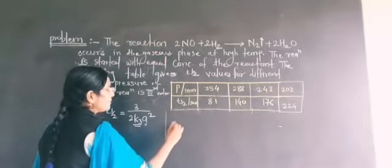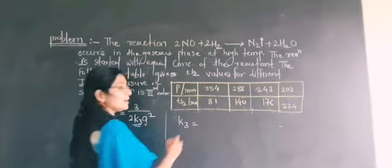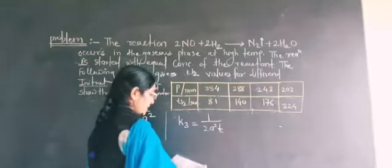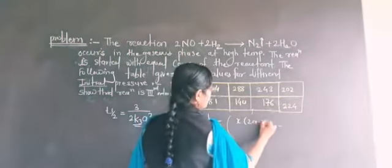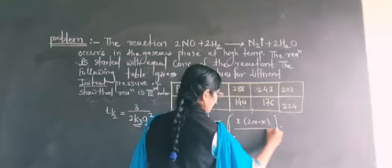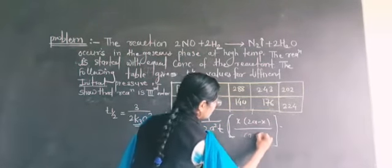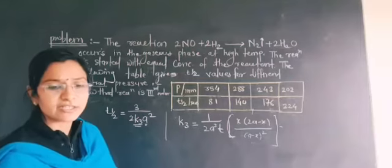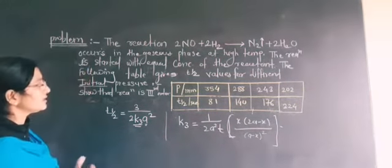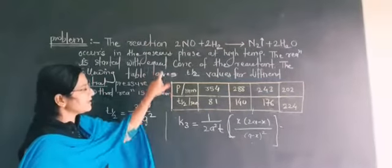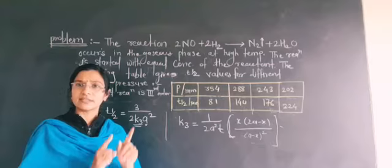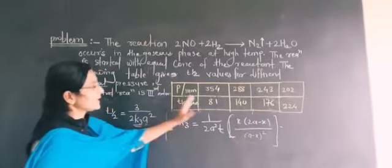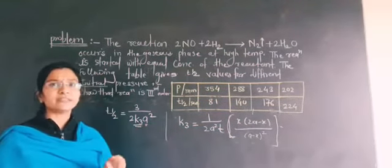The other factor is when some students directly consider the rate equation and rate formula. Now you should understand which equation is used for this numerical. Look at the given data. Here the initial concentration is same for all the reactions. Therefore A is the initial concentration and it is the same. The pressure changes with respect to time and time is given as half-life.